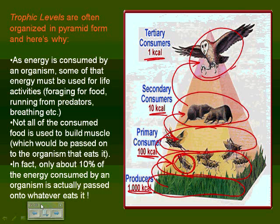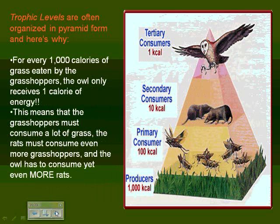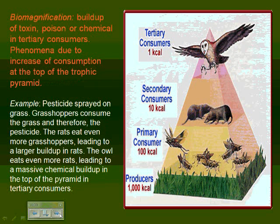Consumers on the higher end of the energy pyramid for trophic levels really need to think about the fact that they need to be eating more. They need to be consuming more of their food source because their food source really doesn't have as much bang for the buck. We also have another concept that plays into energy pyramids and food chains — and that is something called biomagnification.